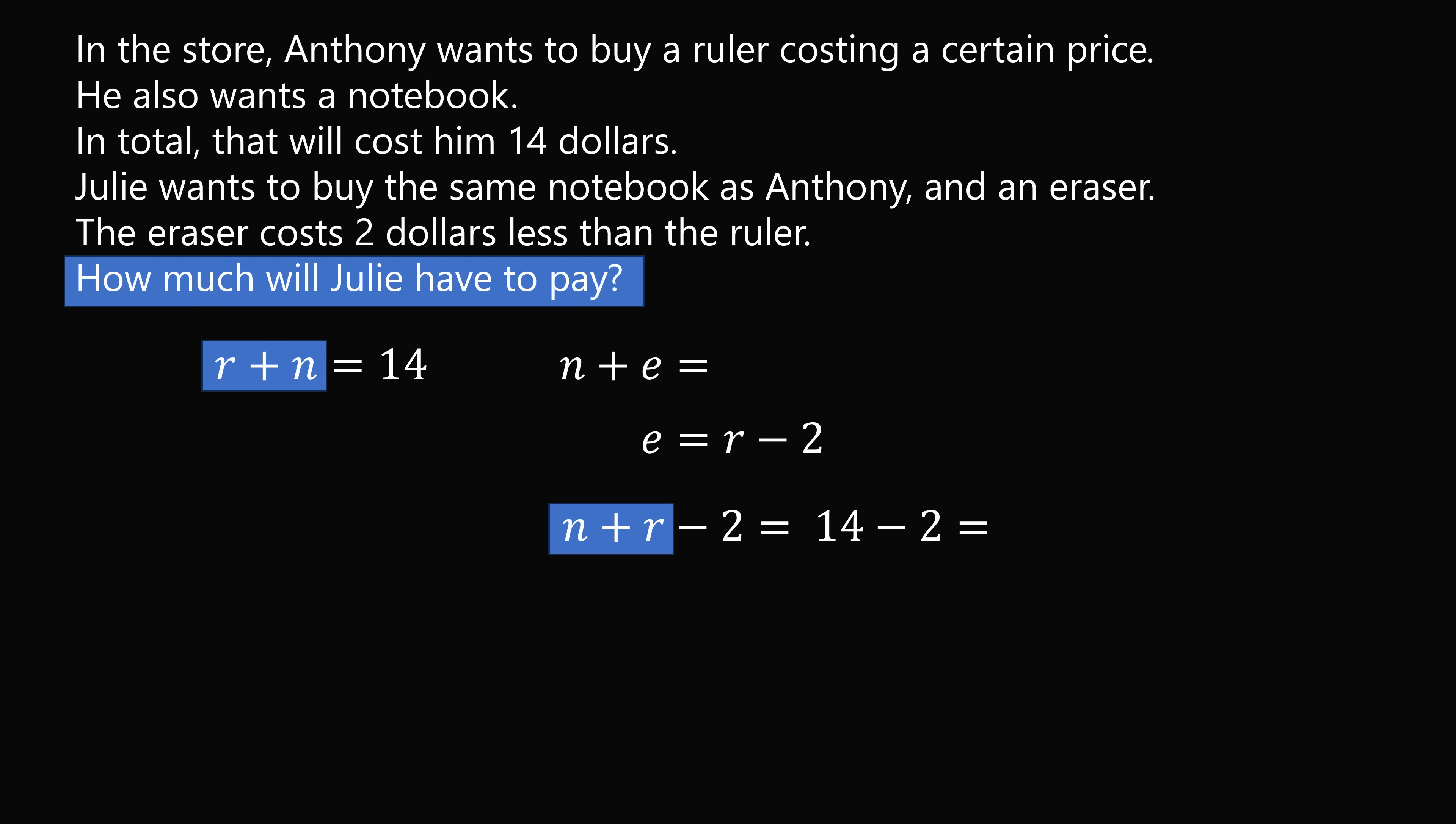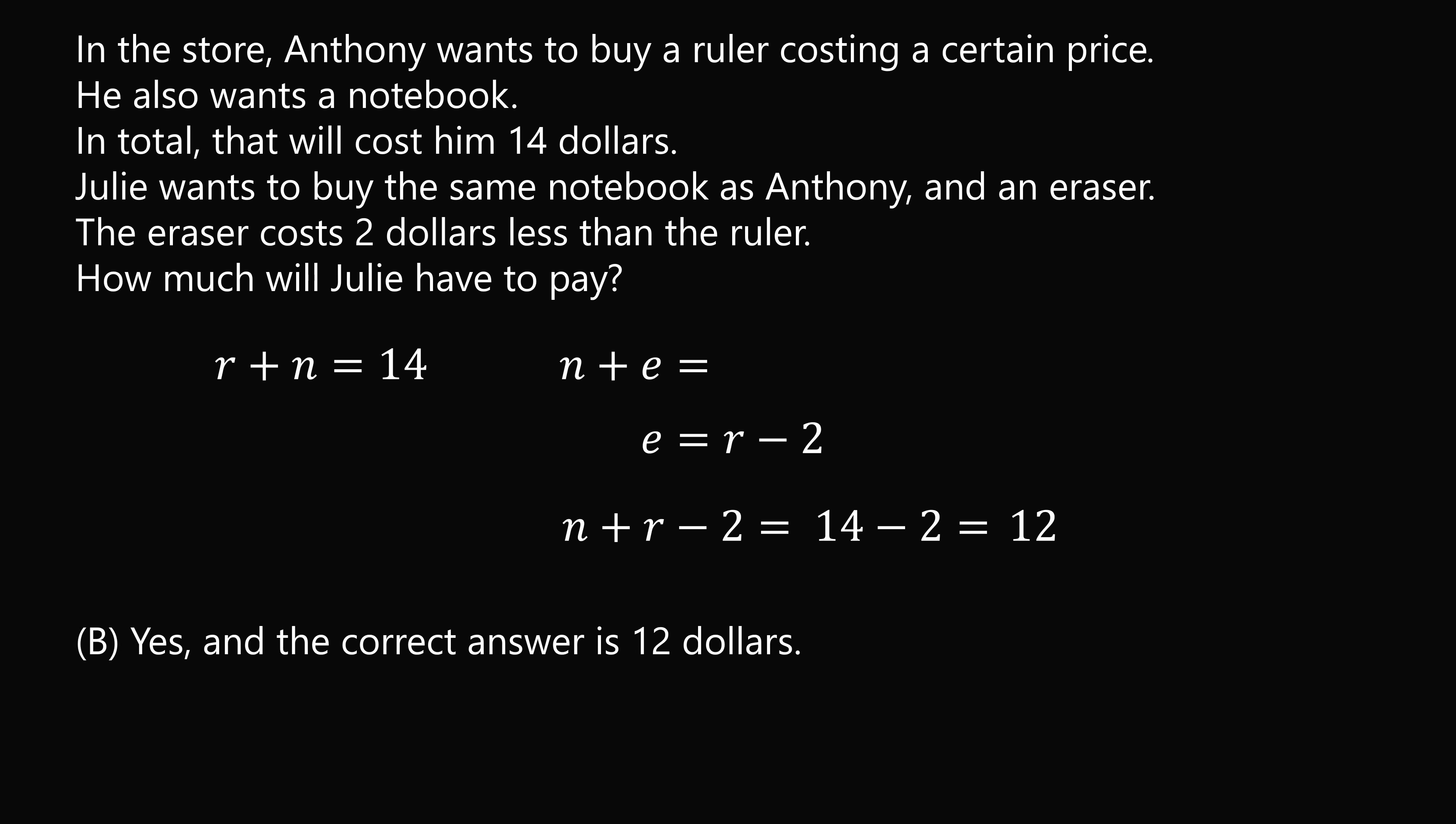So this is equal to 14 minus 2, which is equal to 12. So Julie will have to pay $12. So the correct answer is b. And the correct answer is $12.